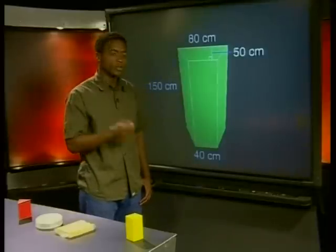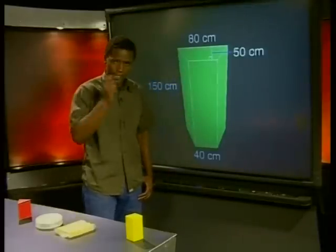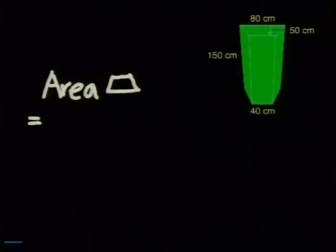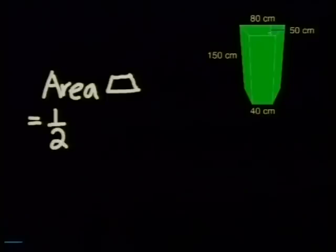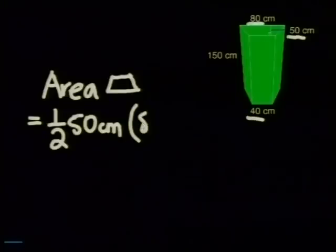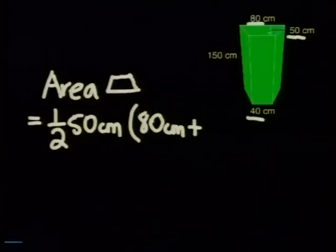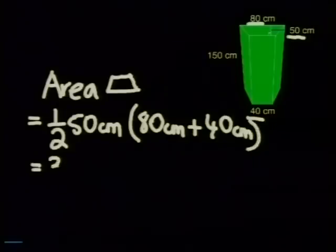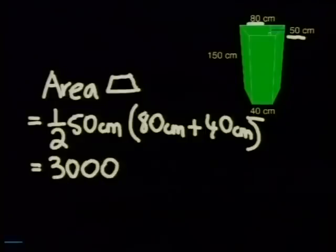So working out the volume of this right trapezoidal prism should be quite easy now. See if you can do it with me. So we can say that the area of our trapezium is equal to half our perpendicular height, which is 50 centimeters, multiplied by the sum of our parallel sides, which are 80 centimeters plus 40 centimeters, which is equal to 3000 centimeters squared.